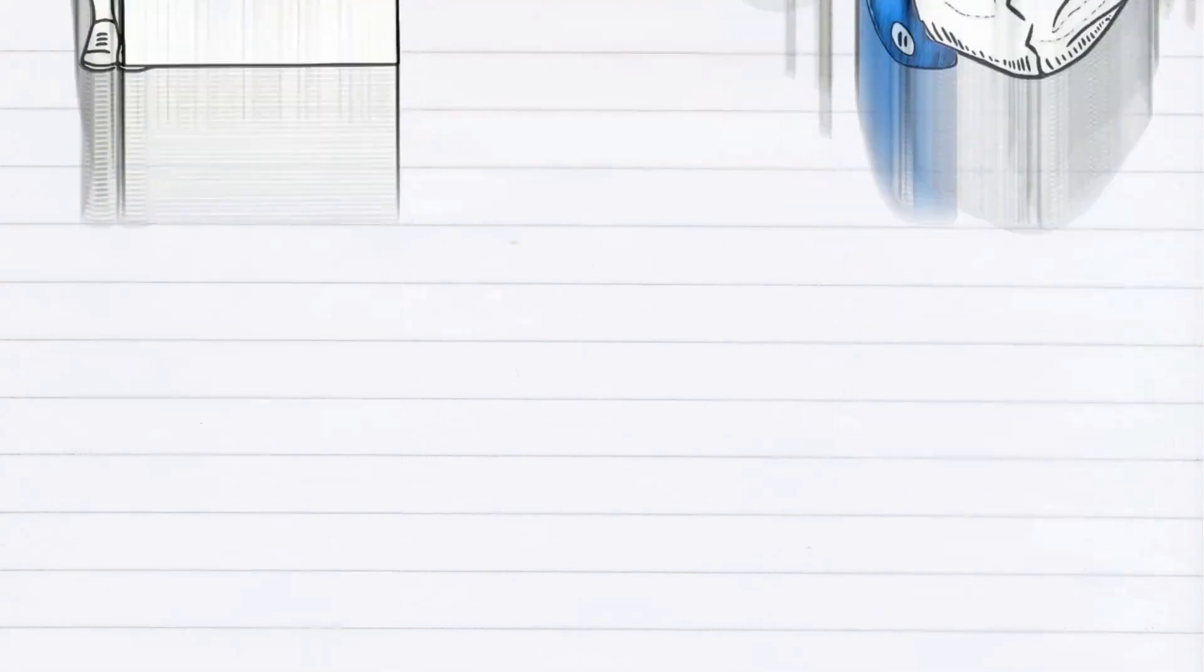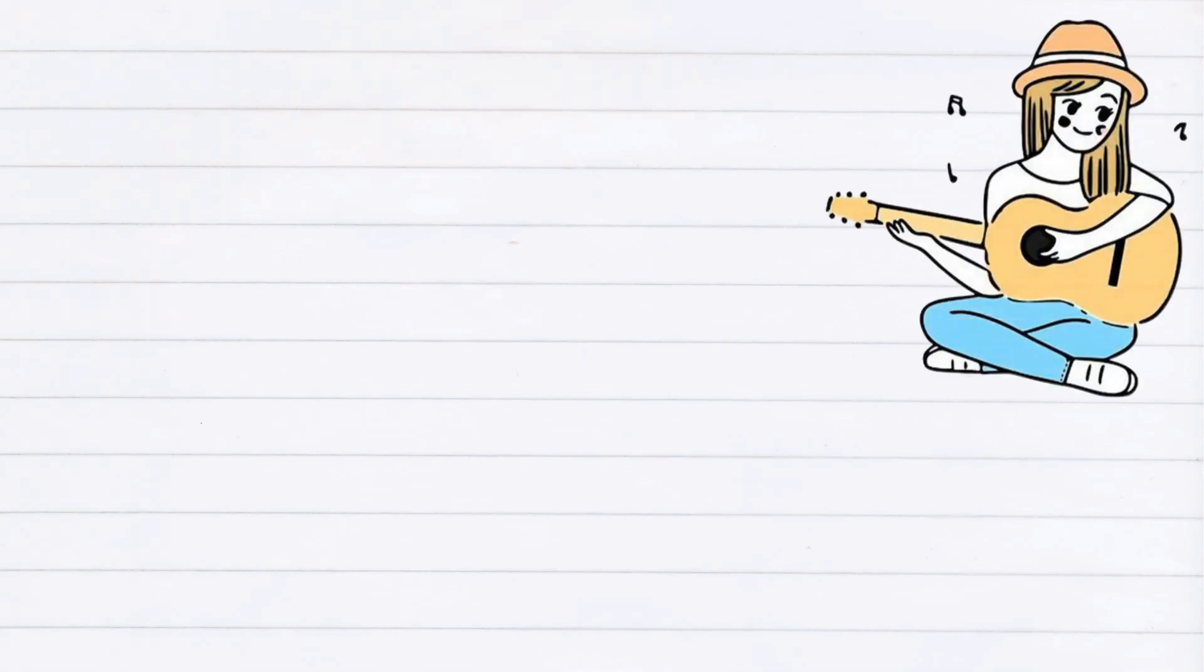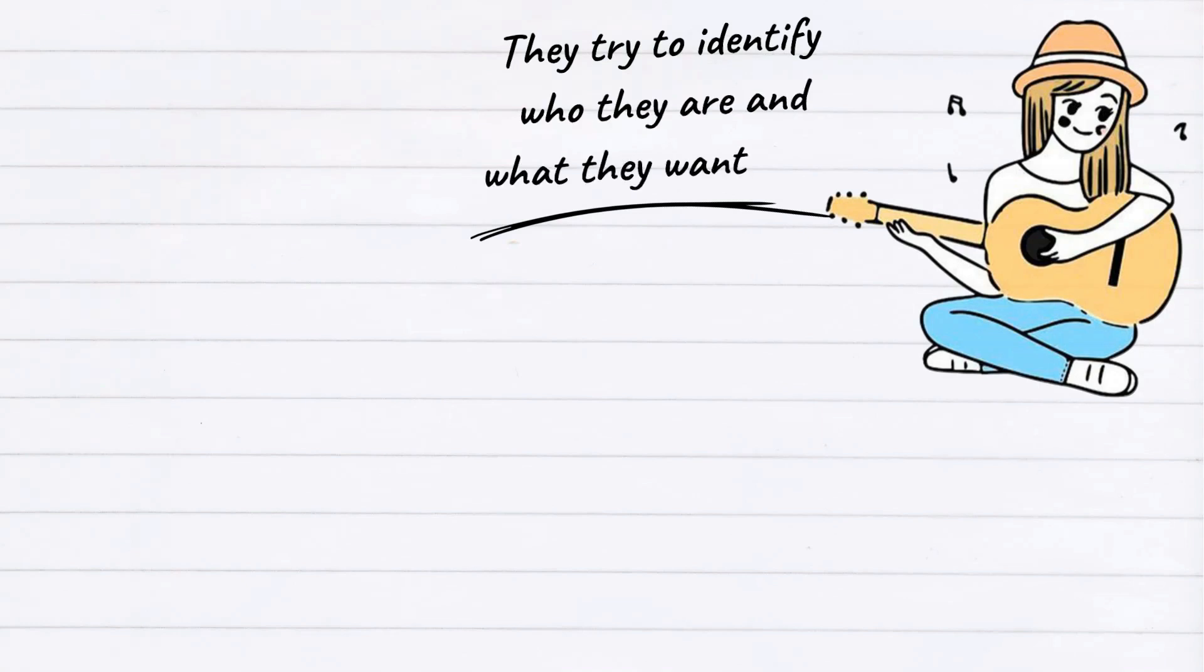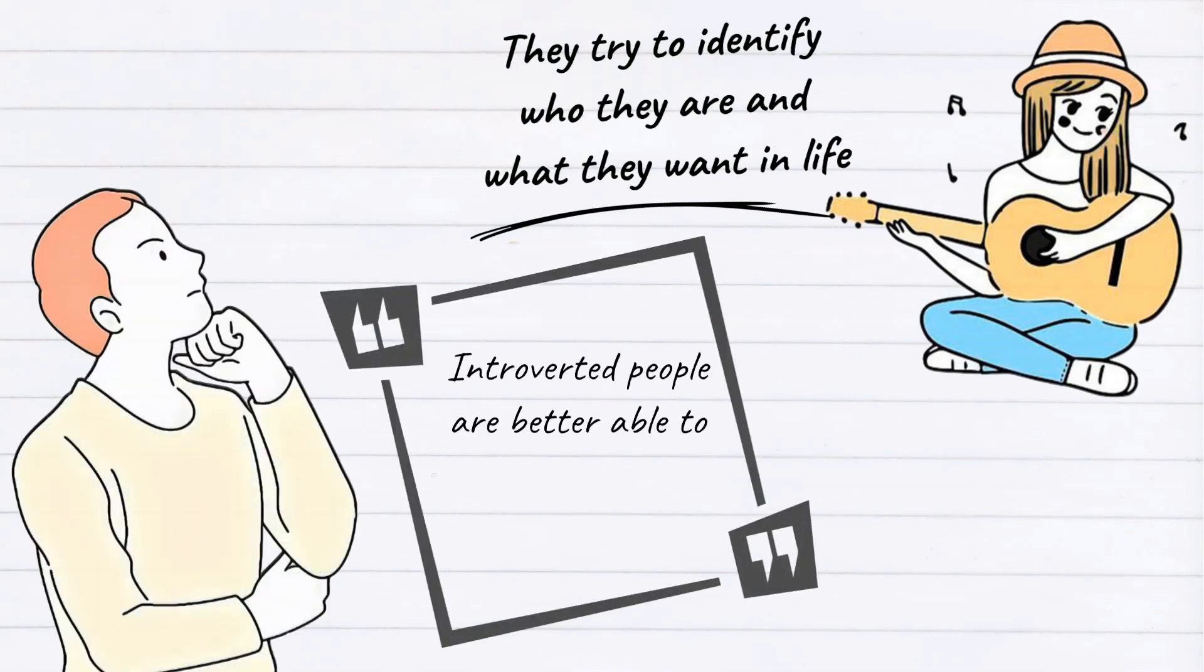Number one: always exploring self-potential. Introverted people like to spend time with themselves as well as exploring their potential. When alone in silence, they try to identify who they are and what they want in life, and they always want to explore new things, an entirely new world in their big imagination. Therefore, introverted people are better able to exploit their potential to carry them forward.